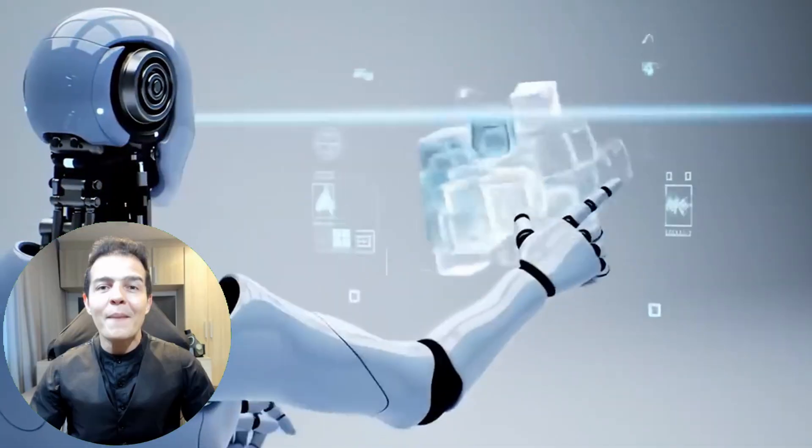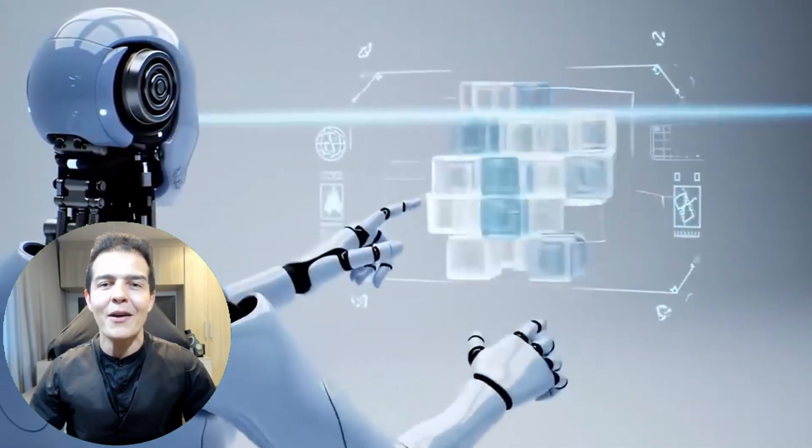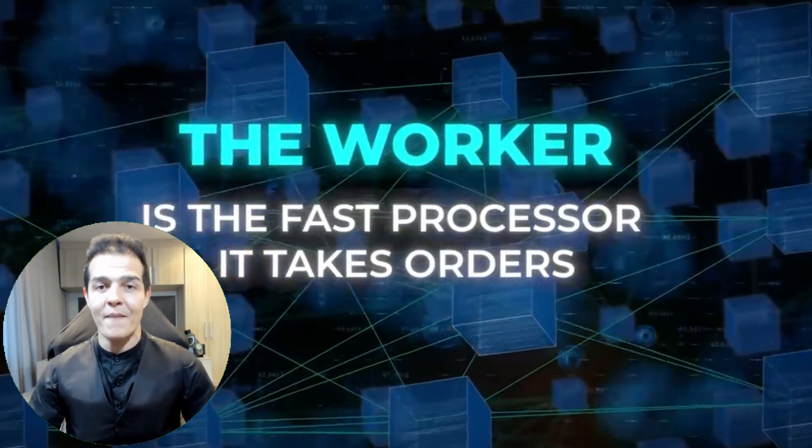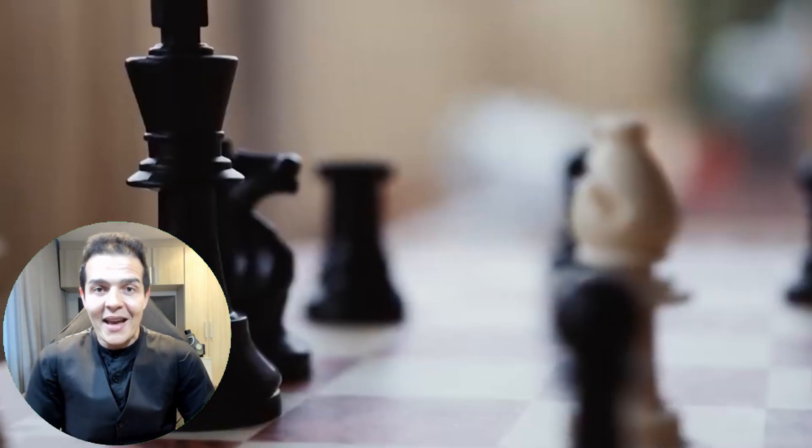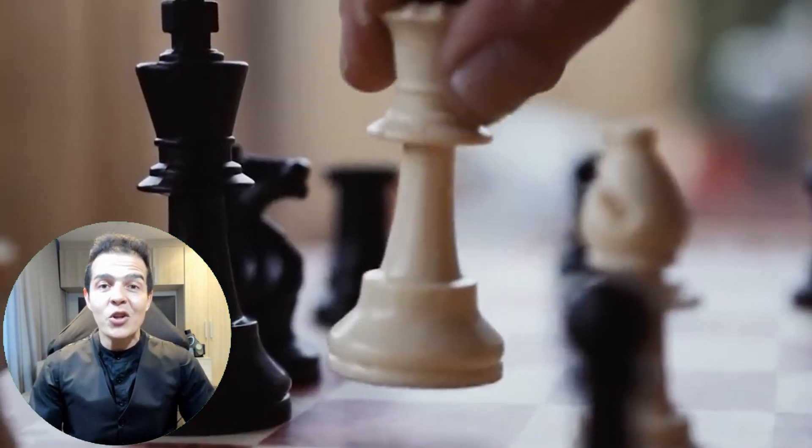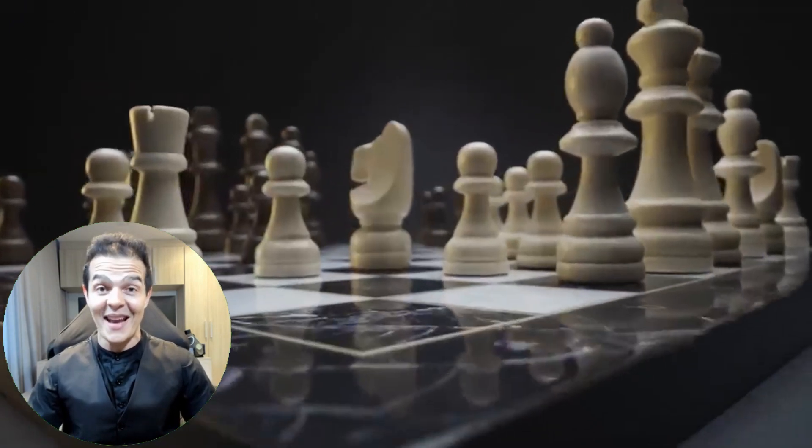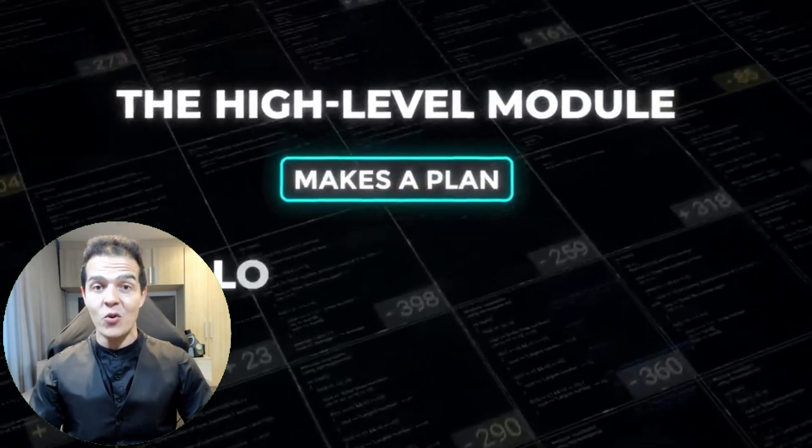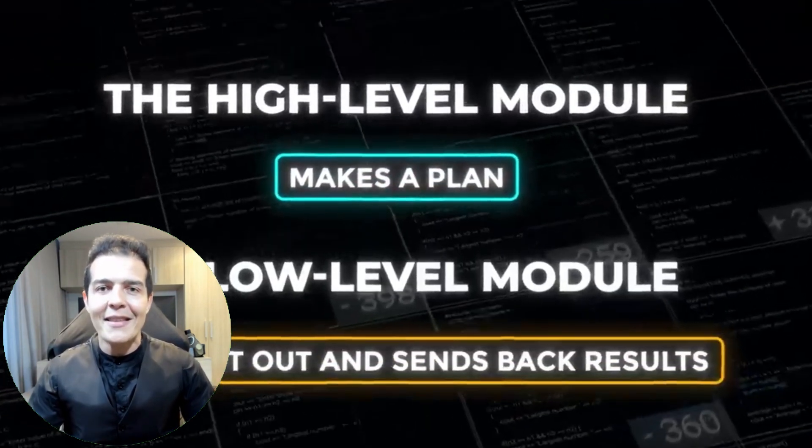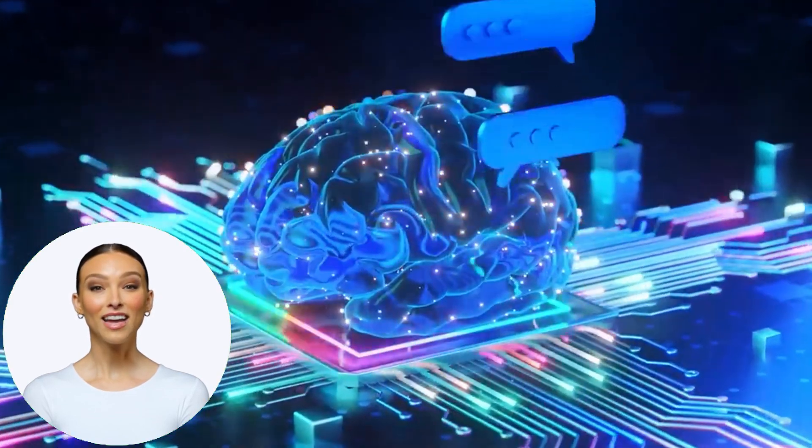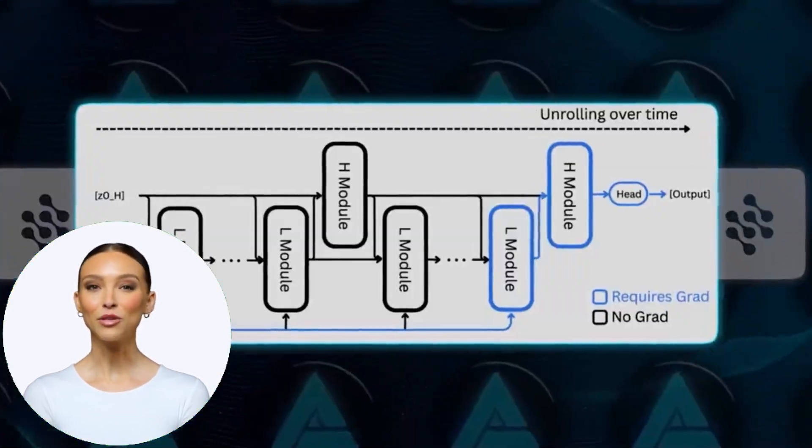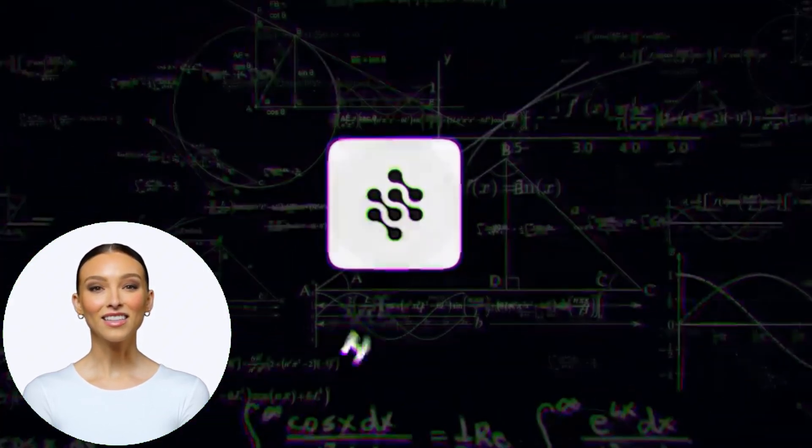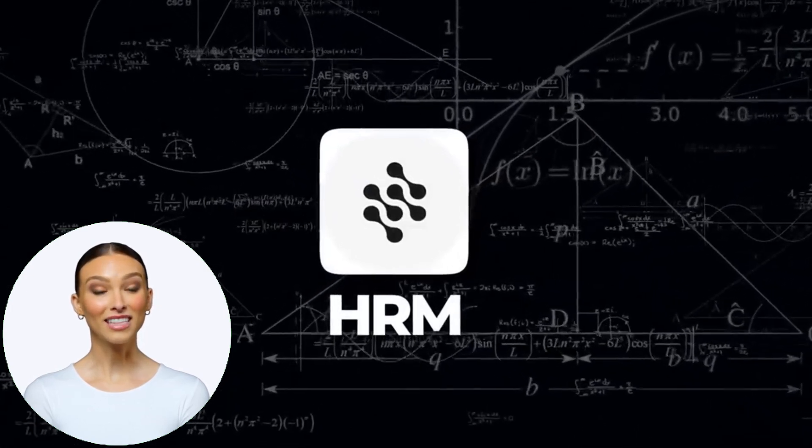And how does it do that, Rodrigo? The HRM has two parts that communicate with each other. A high-level planner and a low-level worker. The planner is like the slow, strategic part of the brain. It maps out the big picture. The worker is the fast processor, which executes orders efficiently. It's like a chess master and the assistant who executes the moves instantly. And the two parts enter a loop. The high-level module makes the plan, the low-level one executes it and returns the results, and the high-level one updates itself. This back and forth continues until the model arrives at the answer.